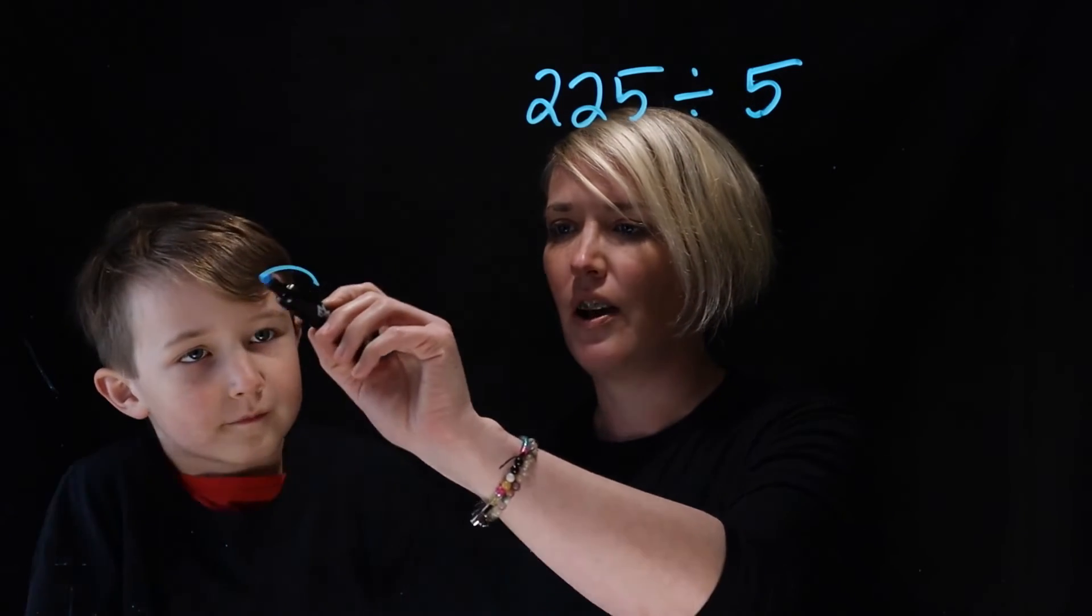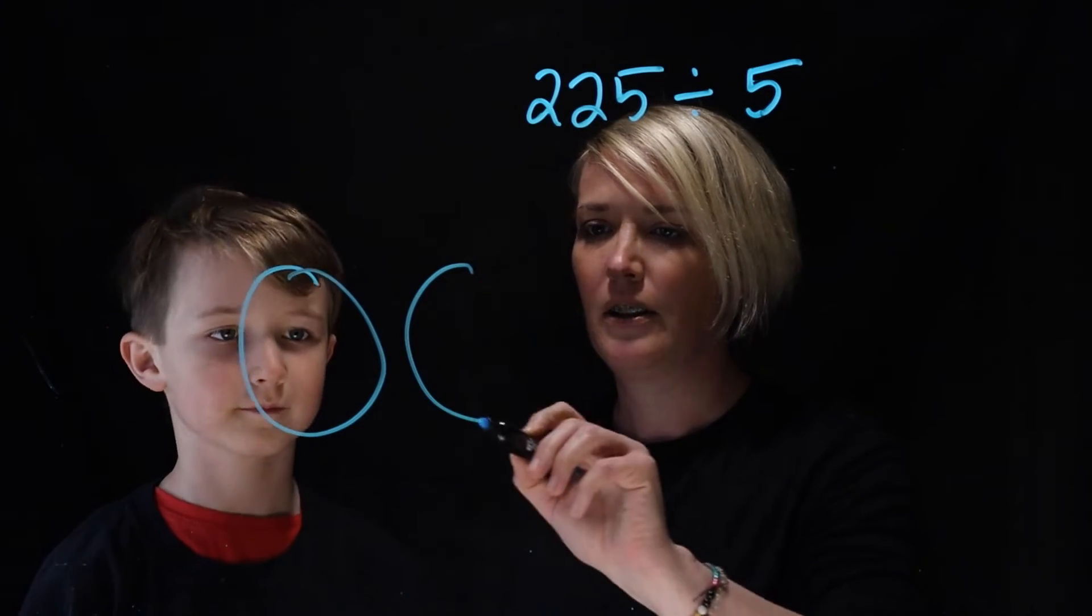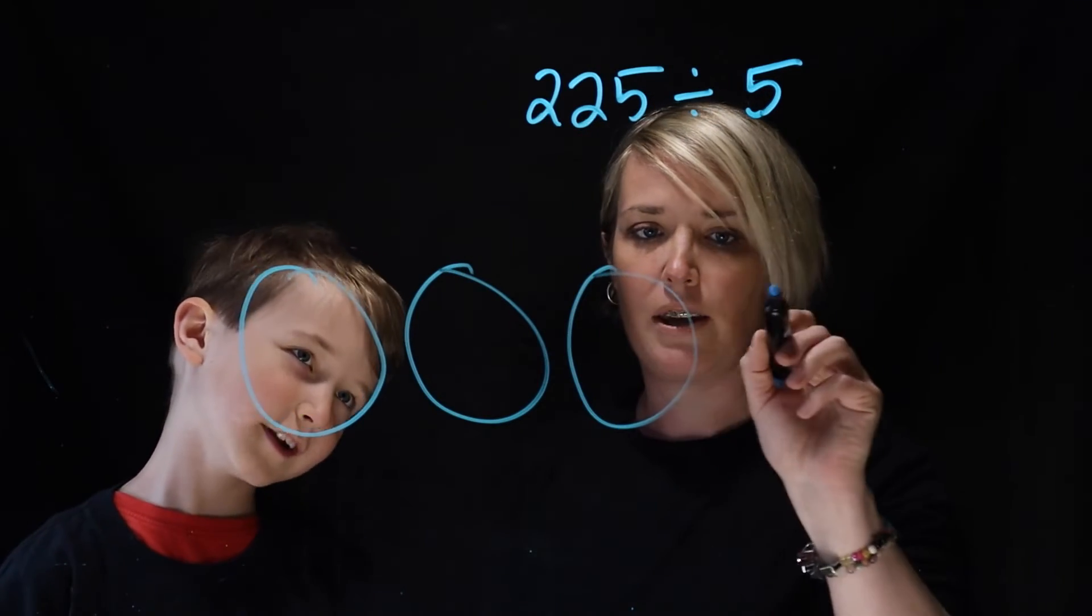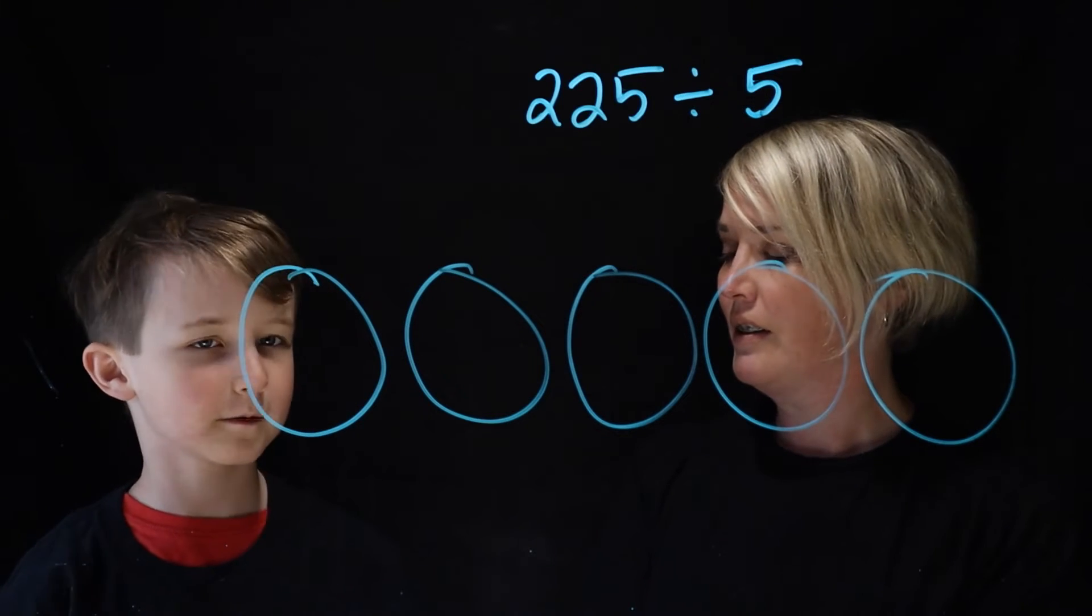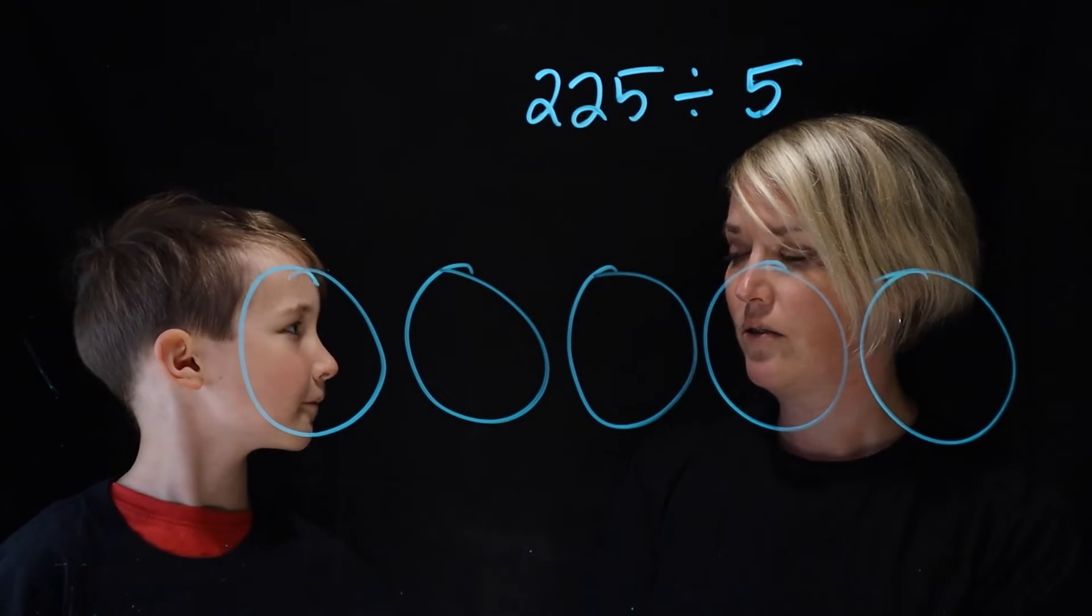Okay, so we're going to split 225 into 5 equal groups. So one, two, three, four, five. Okay. So can you try 40 times 5? 40, okay.